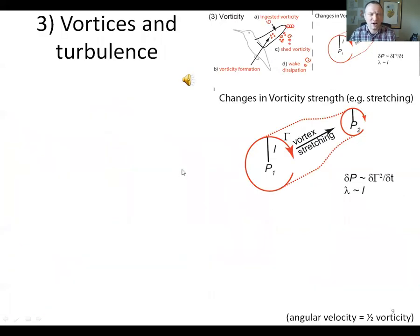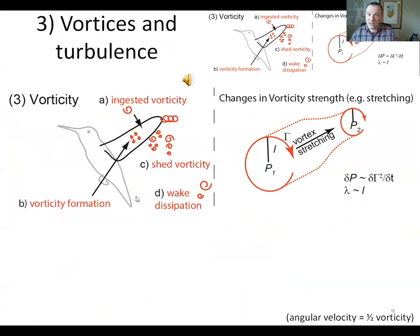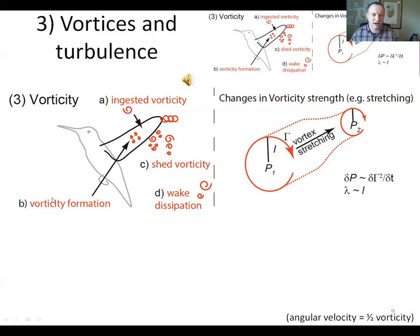The third mechanism: vortices and turbulence. This is actually a special case of the previous mechanism of fluctuating aerodynamic sound. There are four contexts in theory where vorticity can create sound. One: if there's pre-existing vorticity in the air and it gets ingested by the wing, the interaction between vorticity and the leading edge generates sound. Two: vorticity, especially turbulence, can form on a surface such as the wing and produce sound as it forms. Three: as vorticity on the wing is shed by the trailing edge, it interacts with the trailing edge and produces additional sound. And four: vorticity a long ways behind the animal will dissipate, and this vortex dissipation in the wake also creates sound.